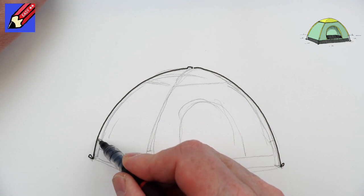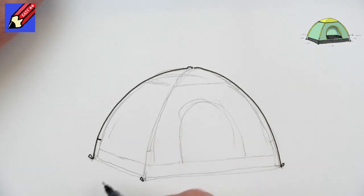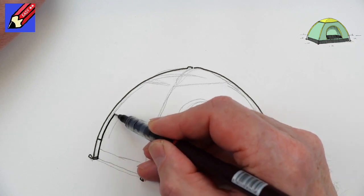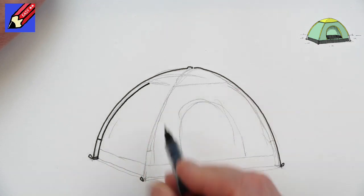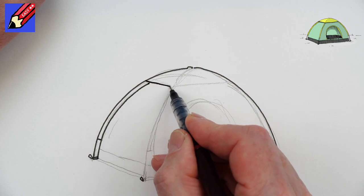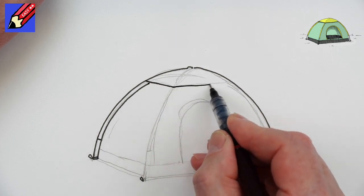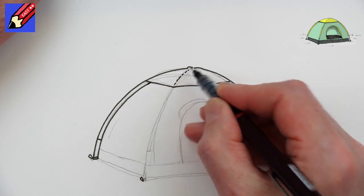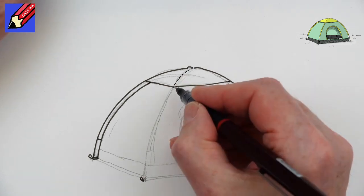We want to draw a little line like that. This is the bit that holds it down on the ground. Then we're going to go up to where this top bit is stretched across, and we can draw a little dotted line across there.